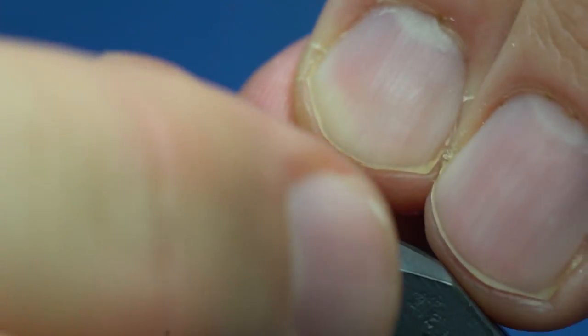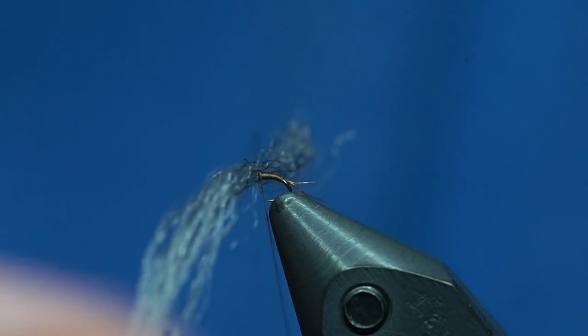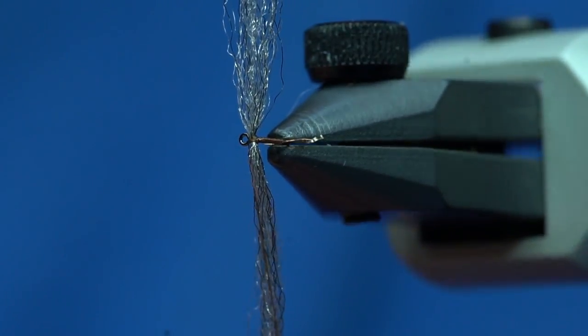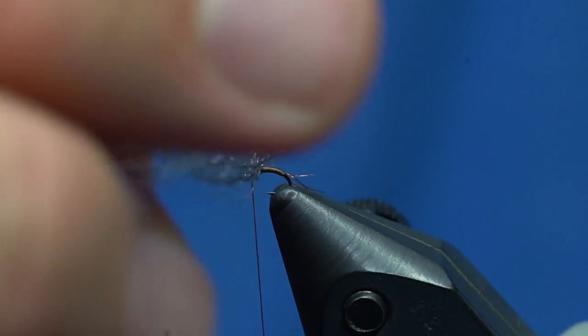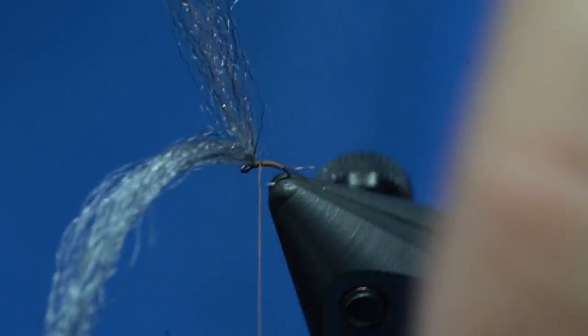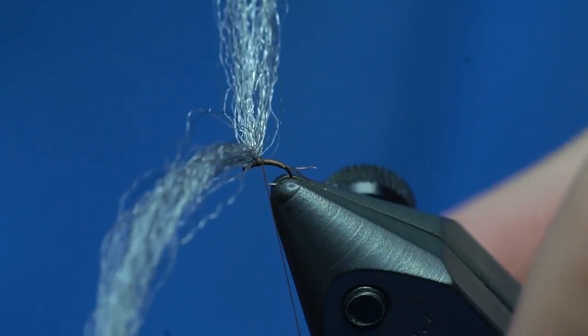As you can see, I've got that figure-eighted onto the hook. Now all I'm going to do is take two wraps around the base of those wings only, and that props those wings up just a little bit.